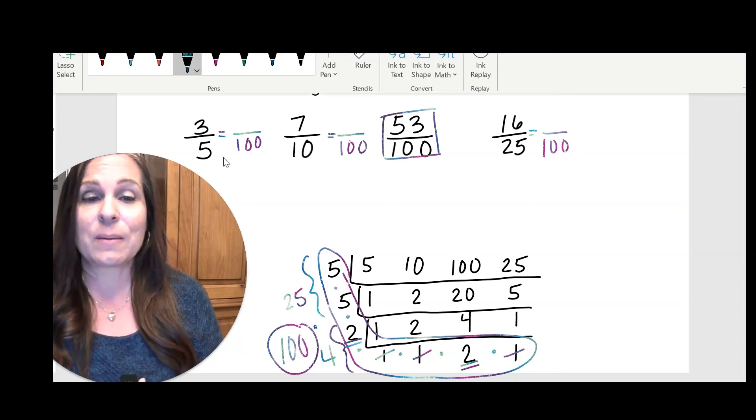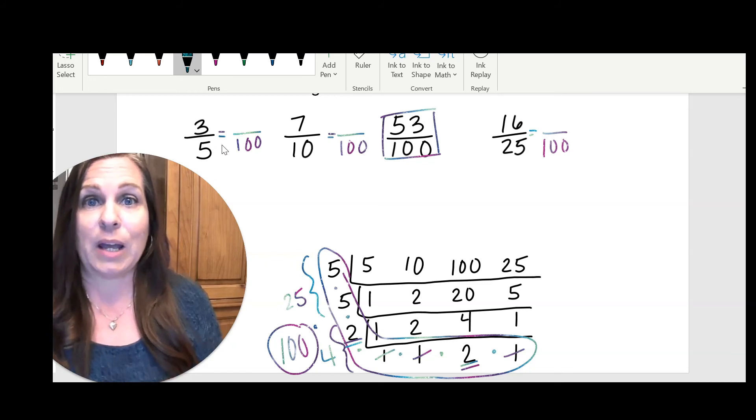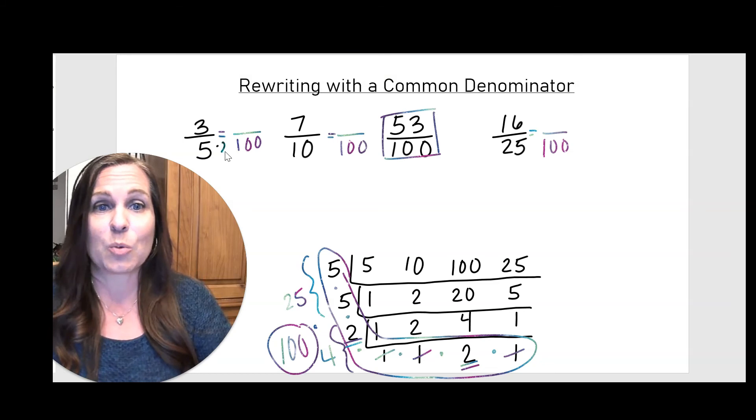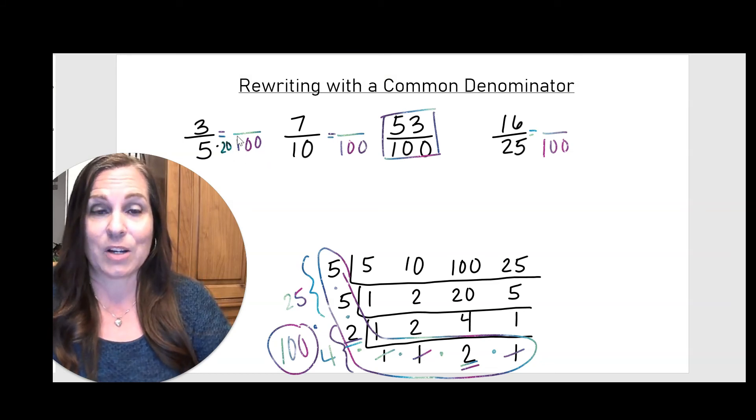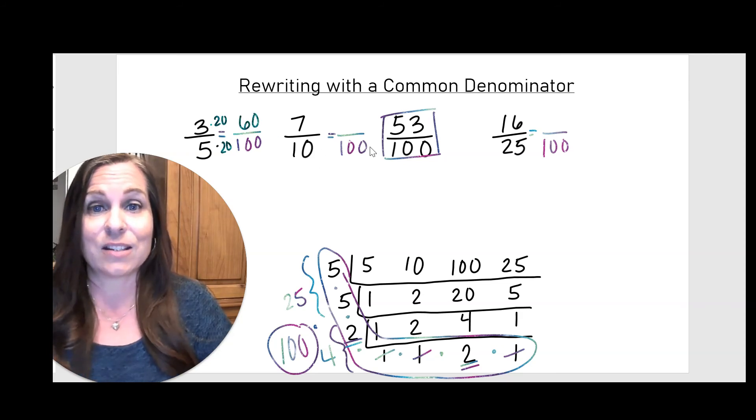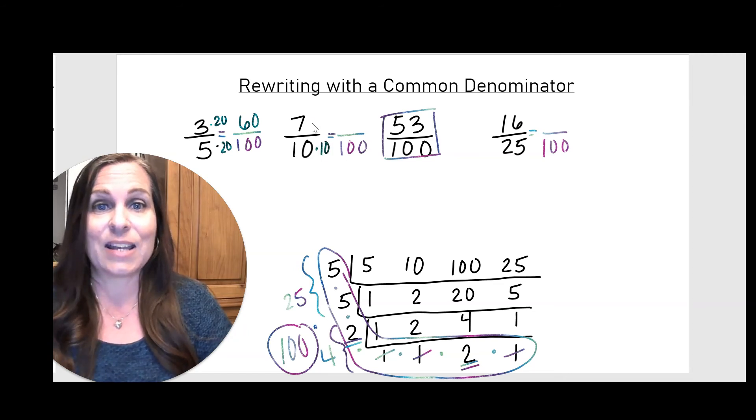Now let's find the top numbers. So to get the top numbers, remember, we just look at what we would have to multiply to get the new denominator. So 5 times 20 will get us to 100, which means I have to multiply by 20 on top. Let's look at the next fraction. 10 times what is 100? 10 times 10. So I multiply by 10 on top.